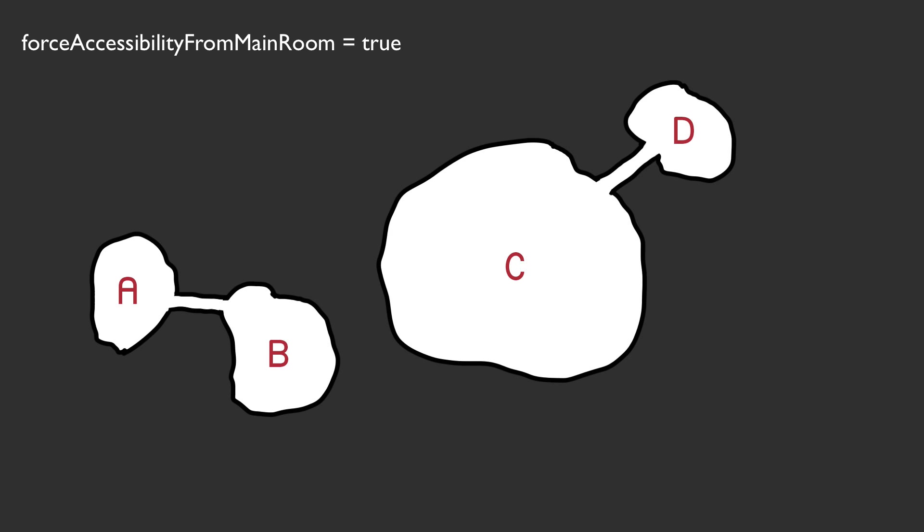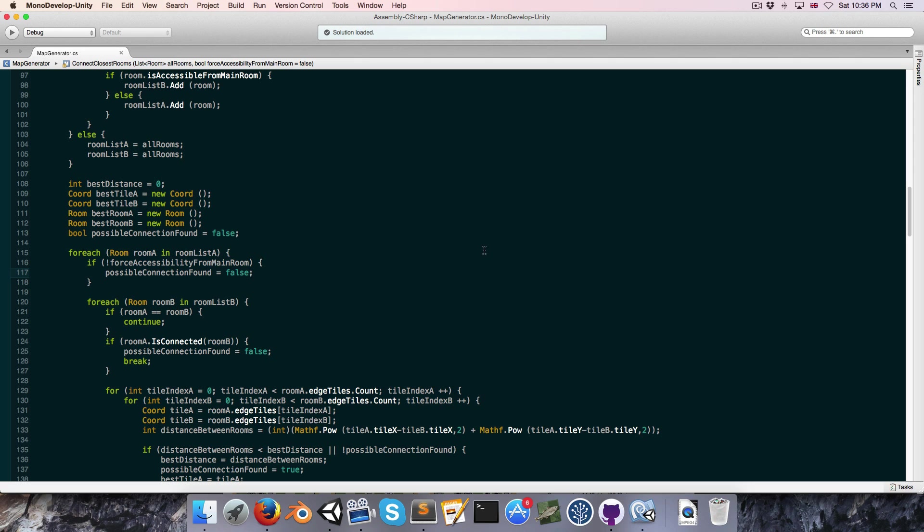So instead of creating the connection from room A to room C immediately, we look at the other rooms first. Room B is the only other room not connected to the main room, so we look at the distance from B to C and from B to D, find the shortest distance is B to C, and create that connection instead. Then we call the entire method again to see if there are more connections to create — and in this case everything's connected, so we end the method.